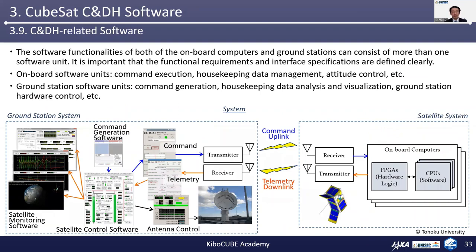The software functionalities of both the onboard computers and ground stations can consist of more than one software unit. It is important that the functional requirements and interface specifications are defined clearly. For example, onboard software units can be divided into several software units with different functionalities such as command execution, housekeeping data management, attitude control, etc.